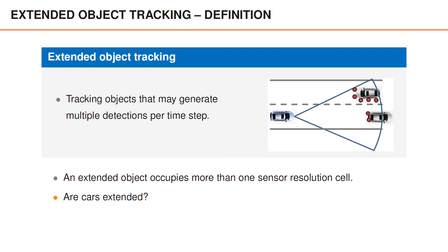You might ask yourself if a car is an extended object or a point object. Well, this depends on the sensor resolution. It generally holds that an object may be a point object when measured with one sensor and an extended object when measured with another. It may also depend on the relative distance between the sensor and the car. For instance, we may receive at most one radar detection from cars that are far away, and multiple radar detections from cars that are close to the sensor.